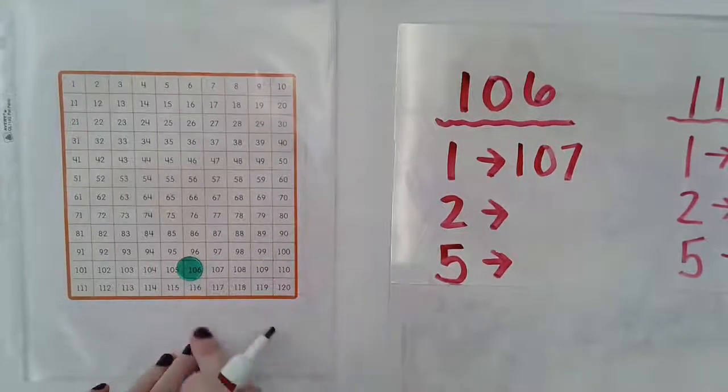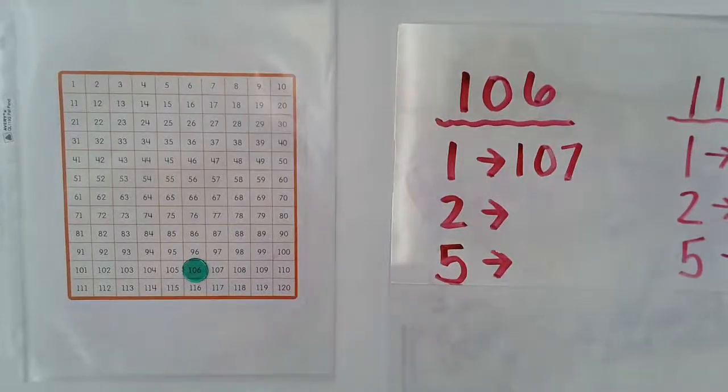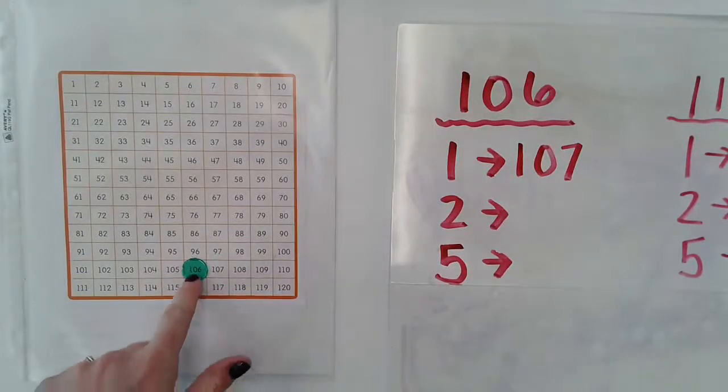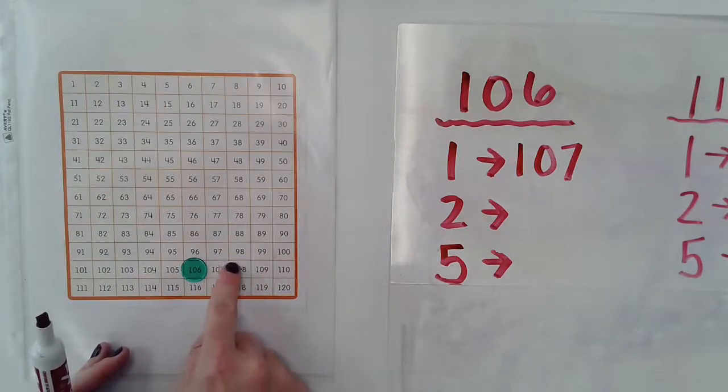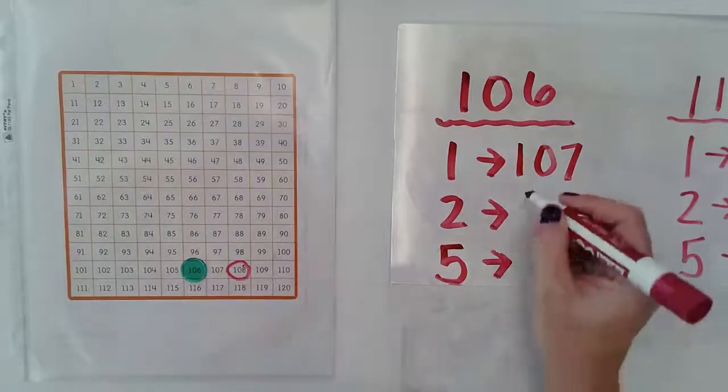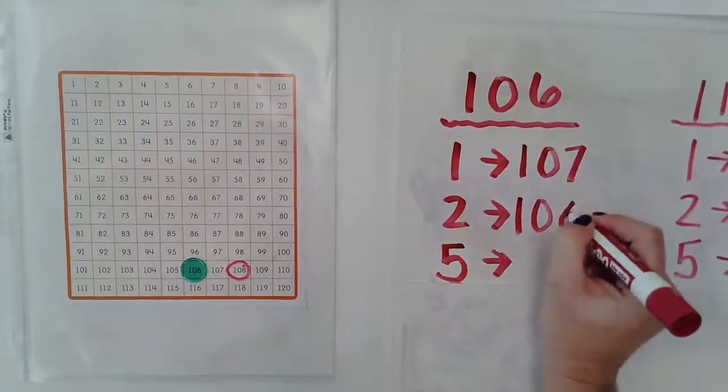So if I want to do two more than that, all I have to do is start with my 106 and count over two. One, two, which would give me 108.